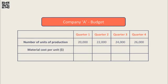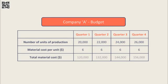The expected material cost for each of these units is $6. This means that the budgeted material cost for Company A for the coming four quarters is $120,000 in Q1, $132,000 in Q2, $144,000 in Q3 and $156,000 in Q4.